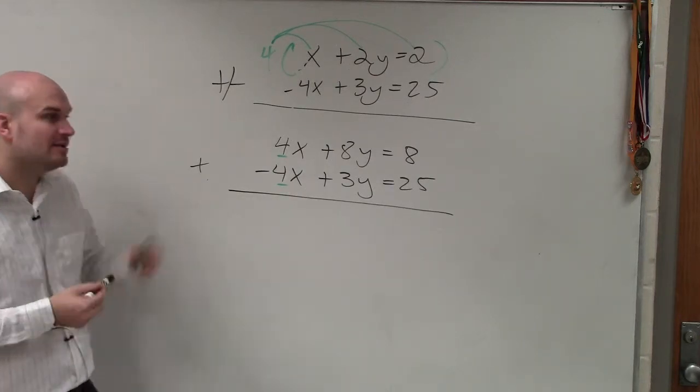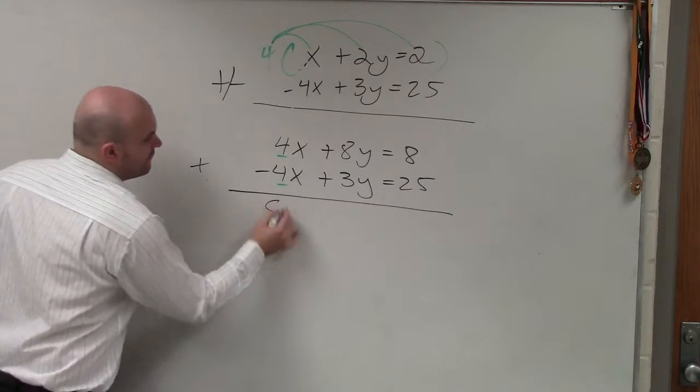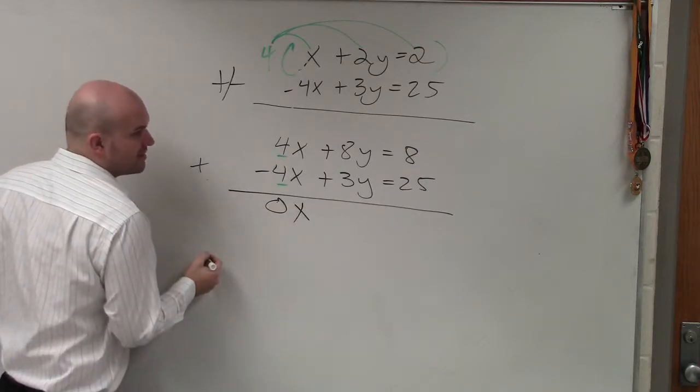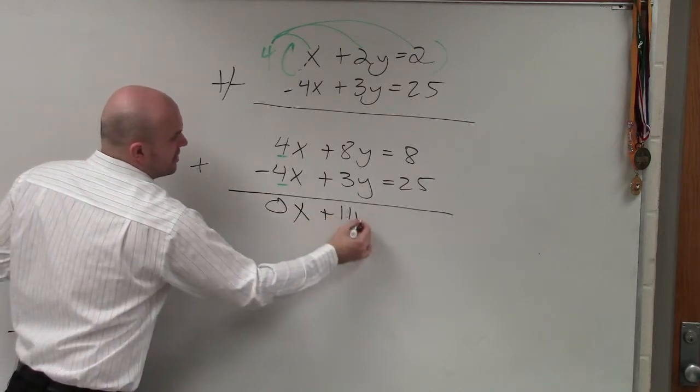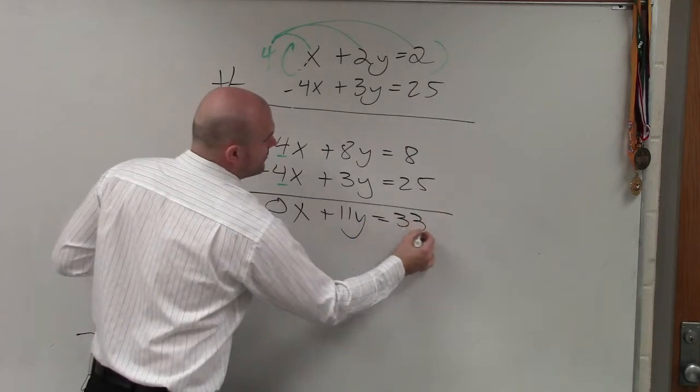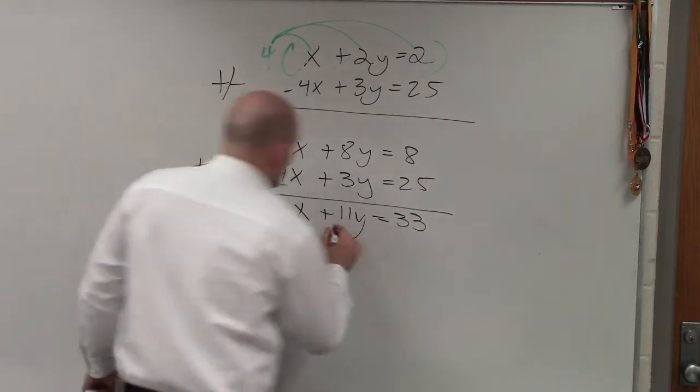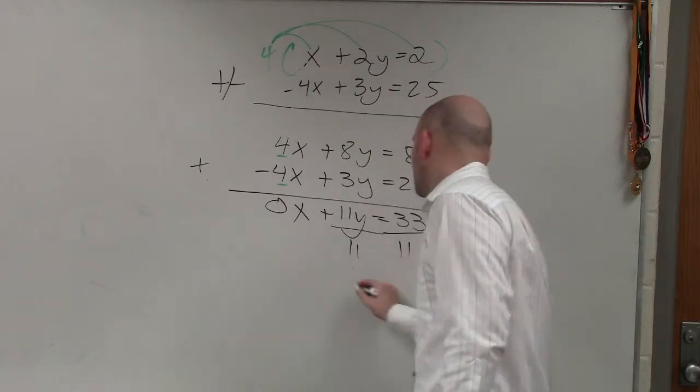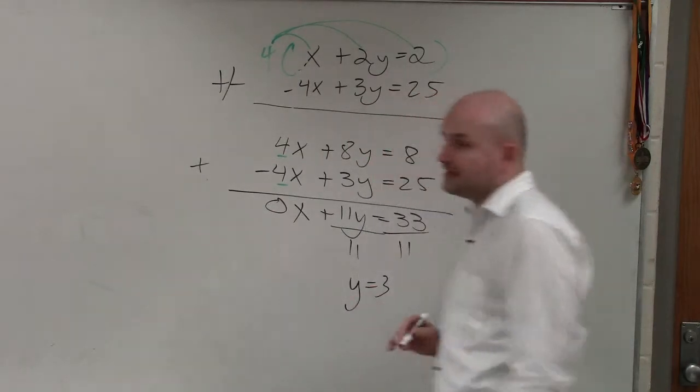Yes. All right. So now, let's add the two equations. 4x minus 4x is 0x plus 11y equals 33. Now, to solve for y, I divide by 11. And I get 3.